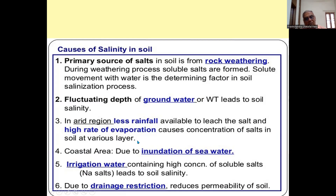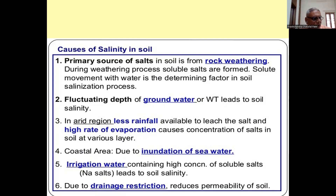In arid regions, less rainfall is available to leach the salts and there is a high rate of evaporation, causing concentration of salt in soil at various layers. In Rajasthan, because it is located in the arid region, the salts are not leached down. Due to more heat and higher rate of evaporation, you will find saline alkaline soil in Rajasthan.